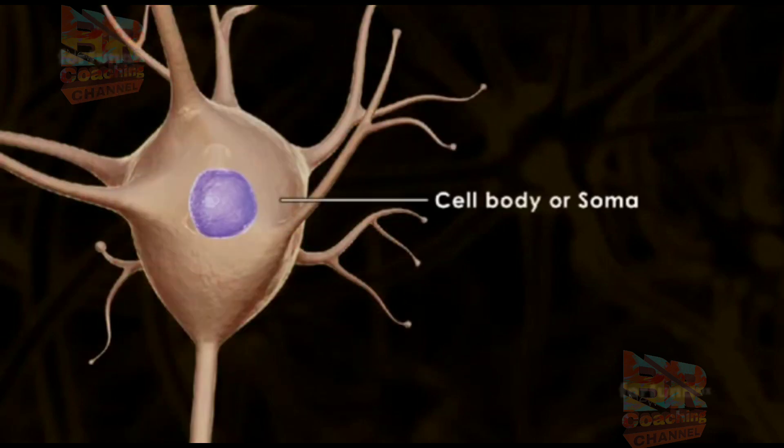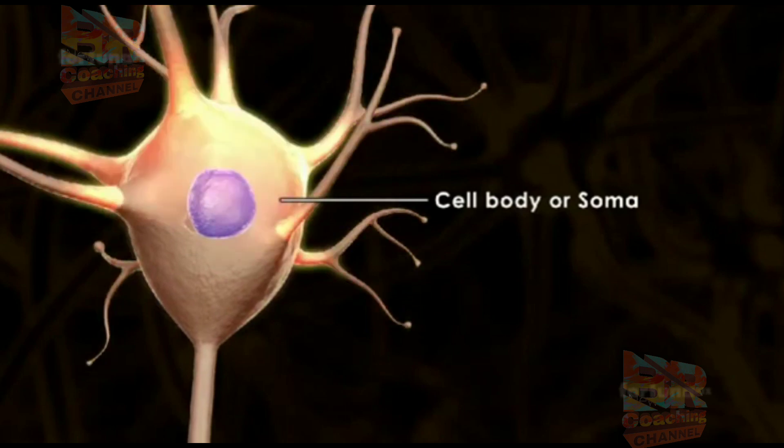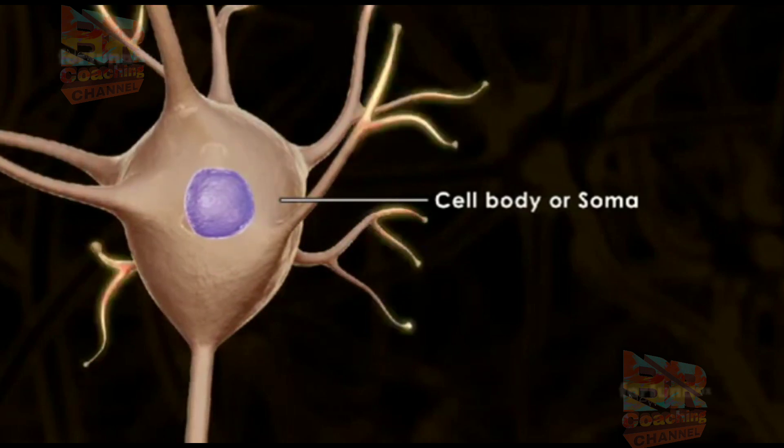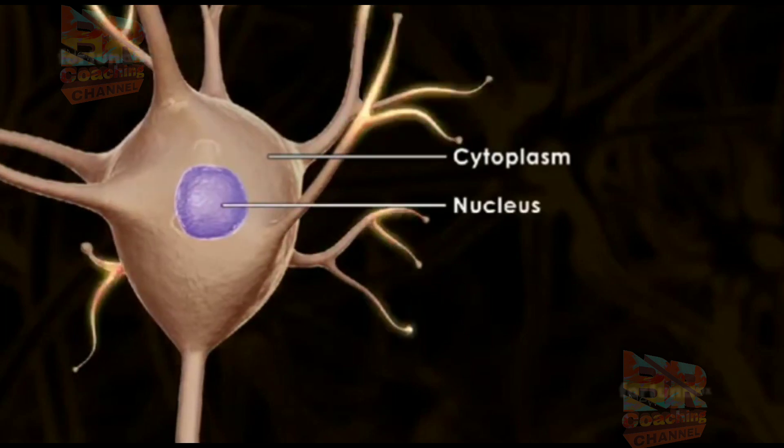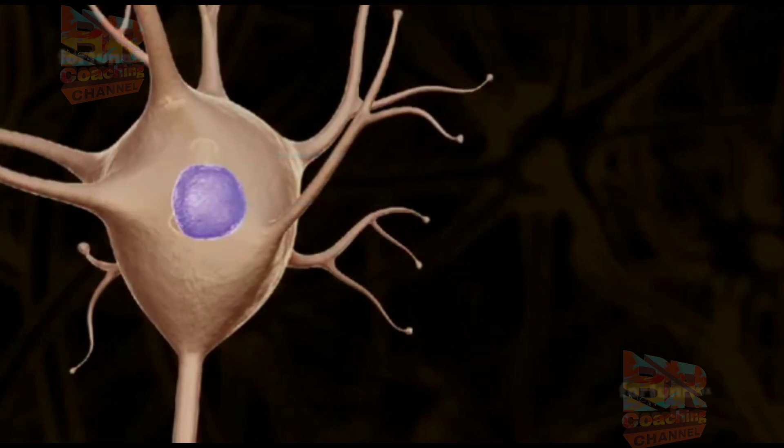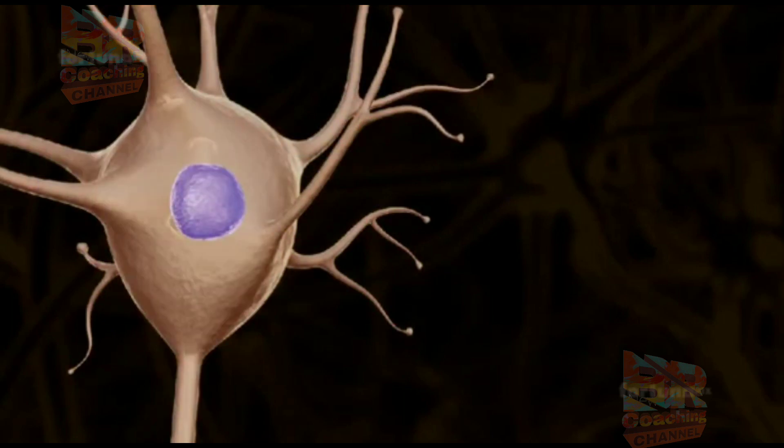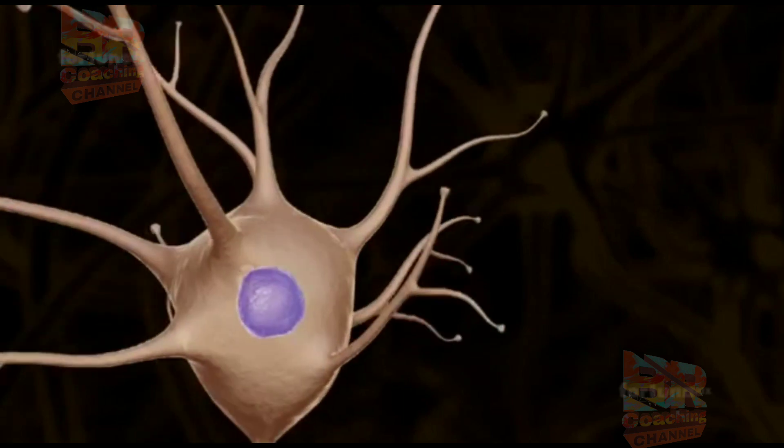The enlarged part of the neuron is the cell body, sometimes referred to as the soma. This is where both the cytoplasm and the nucleus can be found, and the metabolic activity will occur here.